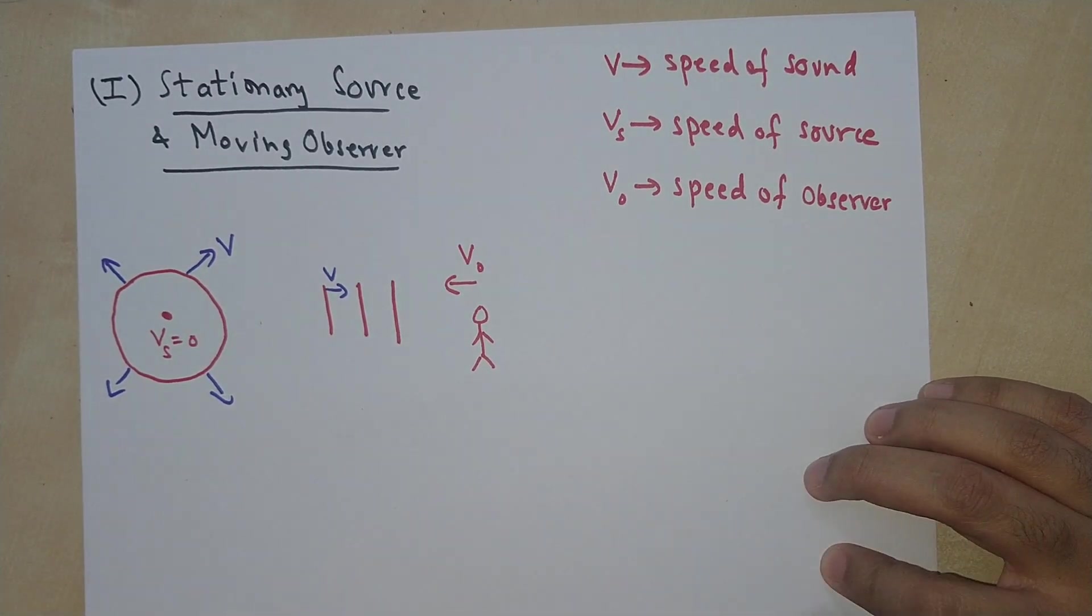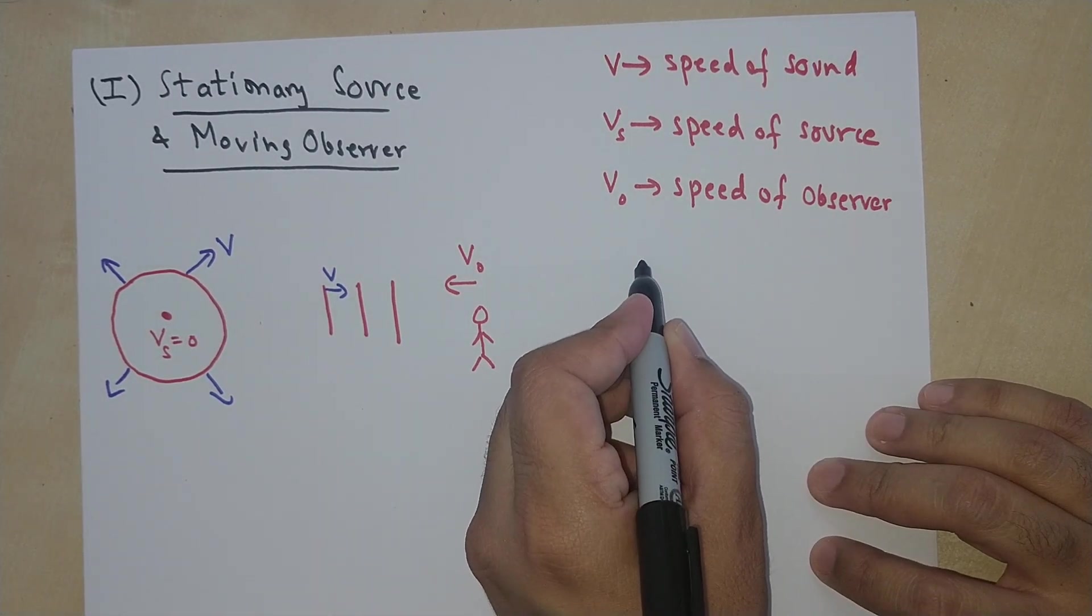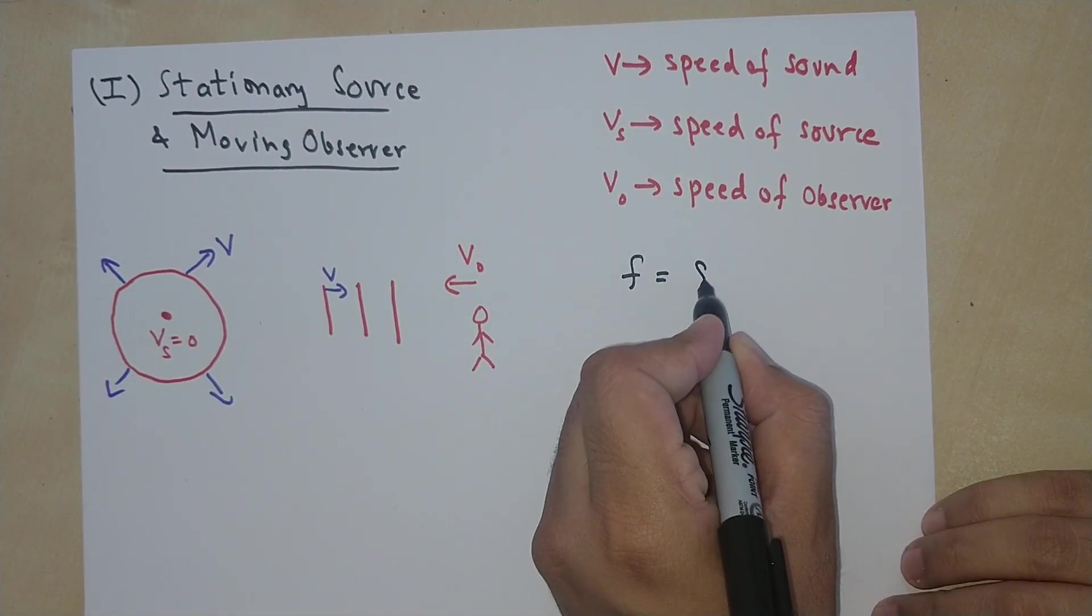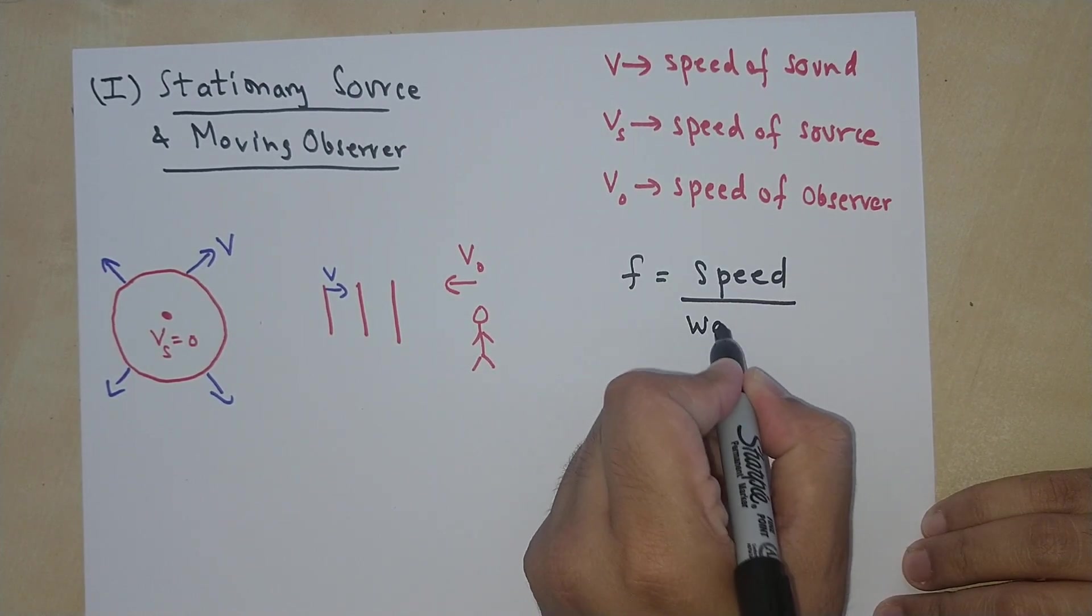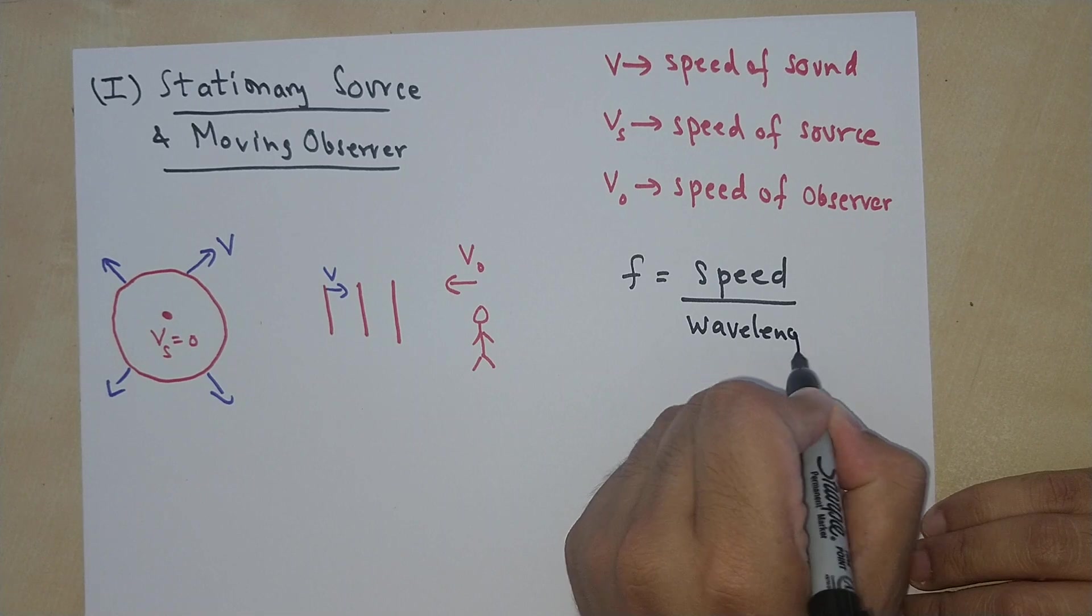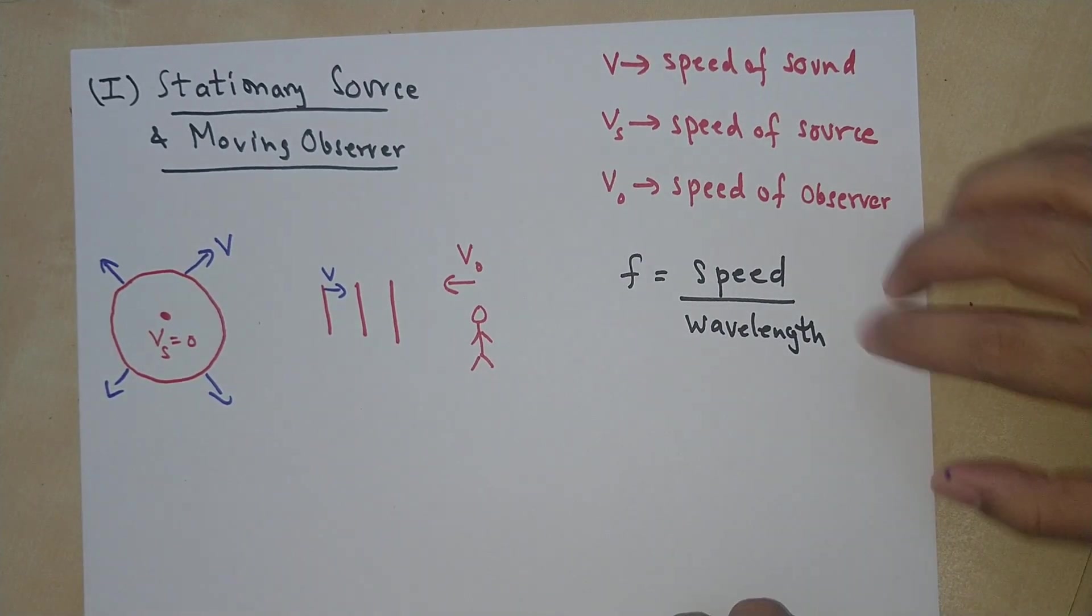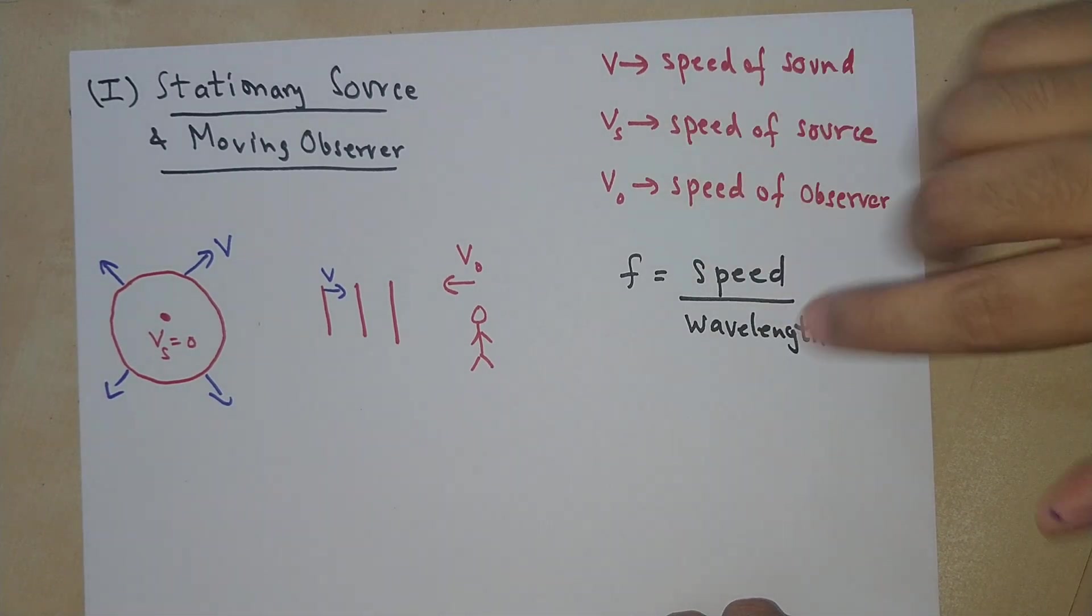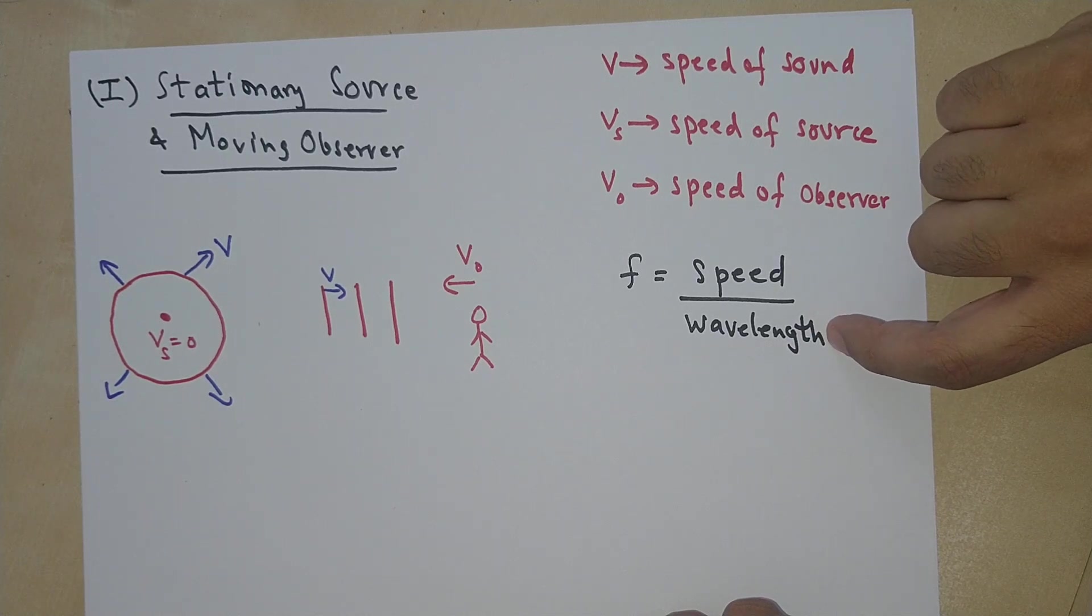Now we want to derive an equation for the frequency of the sound that the observer is listening to. Remember that the frequency is speed divided by wavelength. Now the observer will experience a change in the frequency when either the relative speed or velocity changes and the wavelength changes or both change.